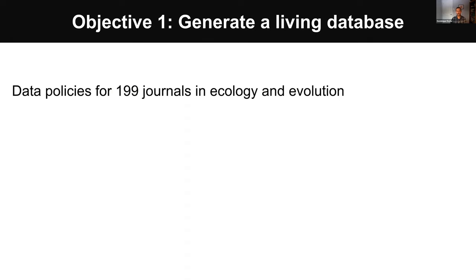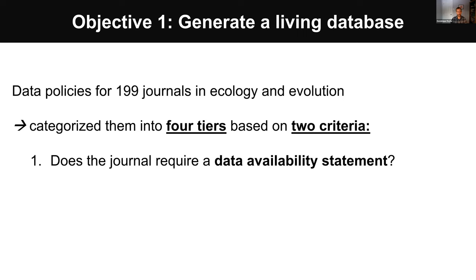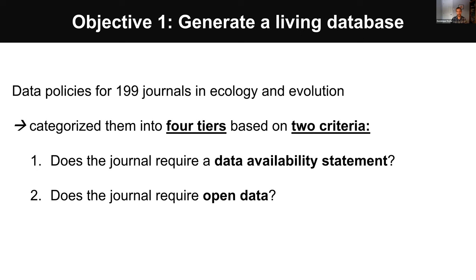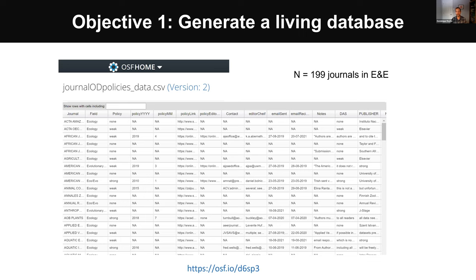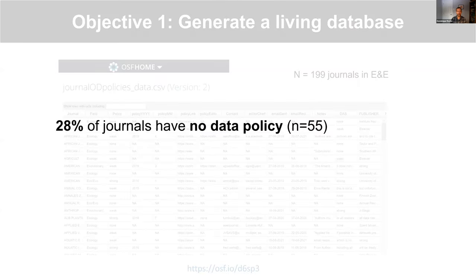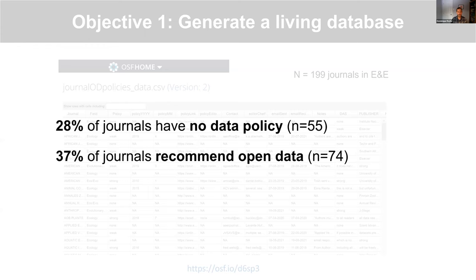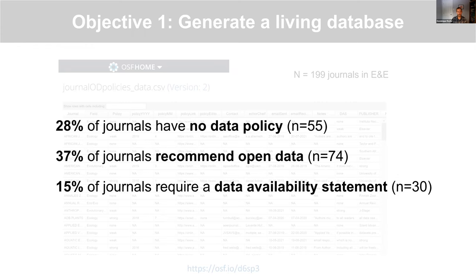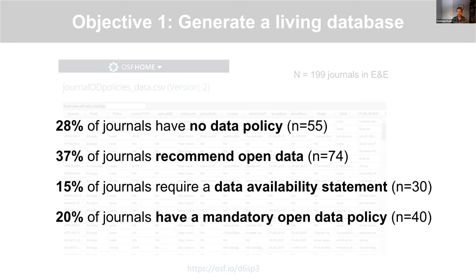For our first objective, we combed through the data policies of the 199 journals listed under ecology and evolutionary biology in Web of Science, and categorized them into four different tiers based on two criteria: whether the journal requires a data availability statement, and whether the journal requires open data as a condition of publication. We put all of this information, including the date of each policy's implementation, into a database publicly available on the Open Science Framework. Overall, we found that 20% of journals do not have a data policy whatsoever, 30% encourage authors to share data but have no requirements, 15% require a data availability statement (which could say 'data available on request'), and 20% — one in five — has a mandatory open data policy.